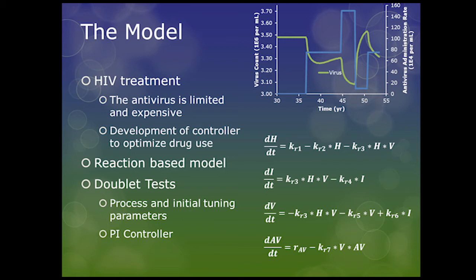We started with the reaction-based infection model developed by Perilsen, and we added in a component to simulate the presence of an antiviral drug. We then passed this model through a modified doublet test where we allowed it to come to an equilibrium state, then stepped the drug concentration up and down through several levels and measured the response. We took this response and fed it into LoopPro's modeling utilities and fitted it to a first-order plus dead-time model, getting an initial guess value set of PI tuning parameters that we then fed back into our original model for testing and fine-tuning.